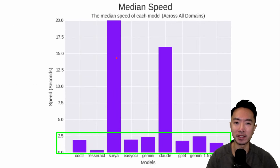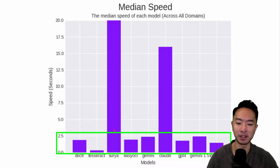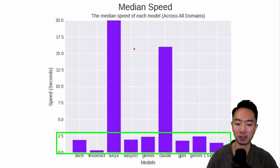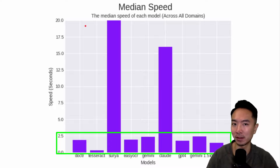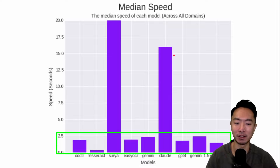Now we're comparing speed for the different models. If you want very fast speed, you'll want to choose everything but Surya and Claude. If you want better accuracy, then you may want to go with Claude as we saw earlier. It really depends on whether you need real-time performance and the frequency you're running at. If a 20-second wait time doesn't matter, then it doesn't really matter which model you choose — you really need to figure out how fast each one needs to run, and from there decide which one you want.